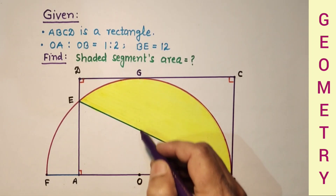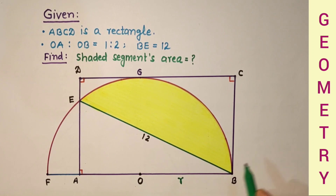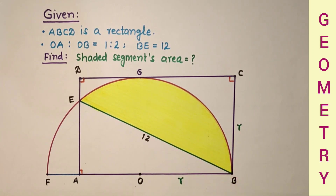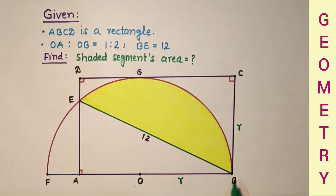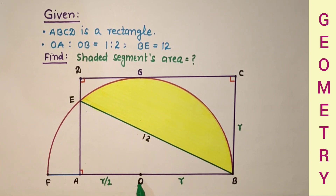So this side is radius, this is radius, this is radius, and this is radius. Since OA to OB is 1 to 2, OE is half of OB, so OE will be R by 2. Now if we join O to E, OE will again be the radius of the semicircle from center to circumference.